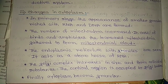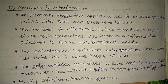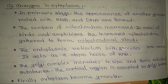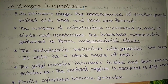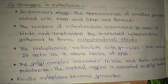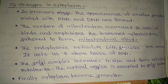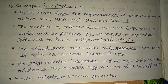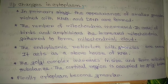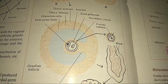Regarding changes in cytoplasm: in the primary stage, smaller granules rich with RNA and DNA are formed. The number of mitochondria increases. In the case of birds and amphibians, the increased mitochondria gather to form a mitochondrial cloud. The endoplasmic reticulum acts as a storehouse of DNA. The Golgi complex increases in size and forms colloidal substances. The cortical region is occupied by the Golgi complex. Finally, the cytoplasm becomes granular.